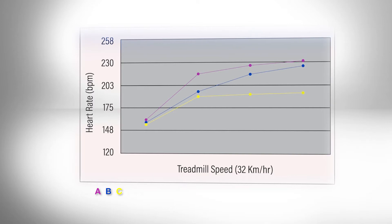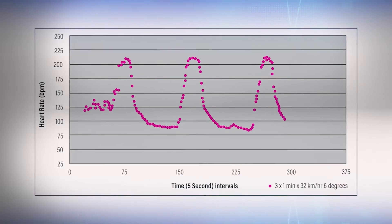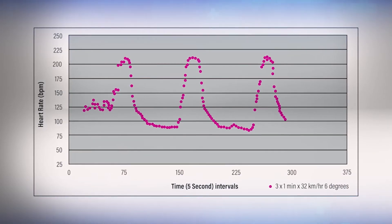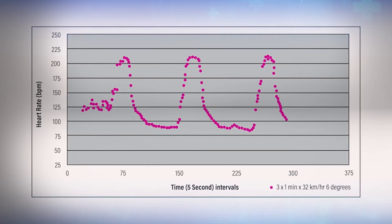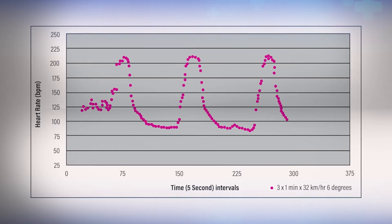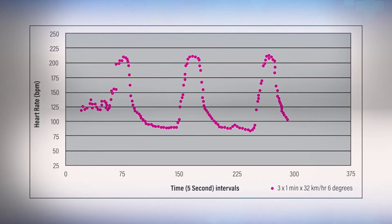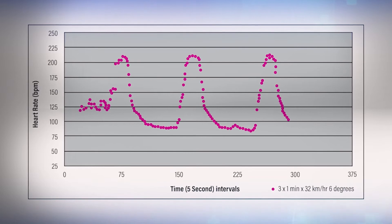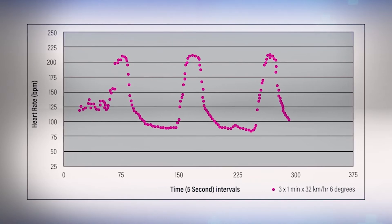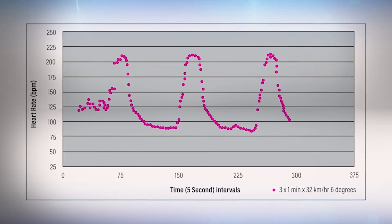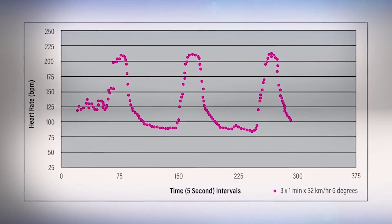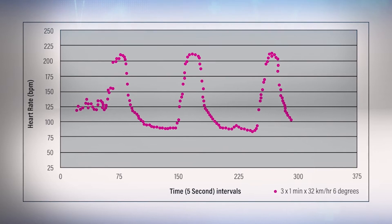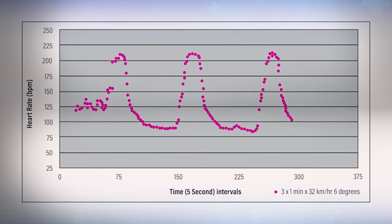If after the first interval the heart rate is not returning to the recovery mark within a designated time, then the second interval should not be attempted. Generally in treadmill interval work, a recovery period of 1.5 minutes is used during which the horse is walked at zero grade. In this time, the heart rate should be reduced to approximately 110 beats per minute.